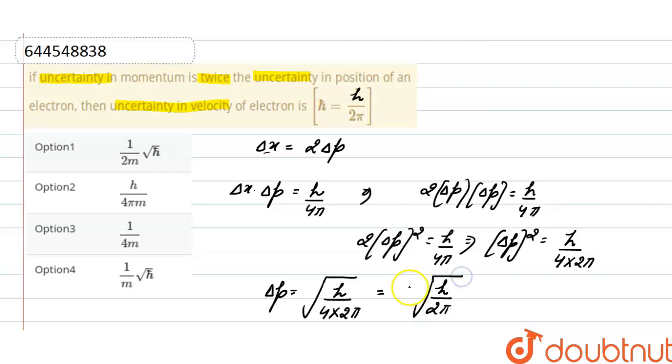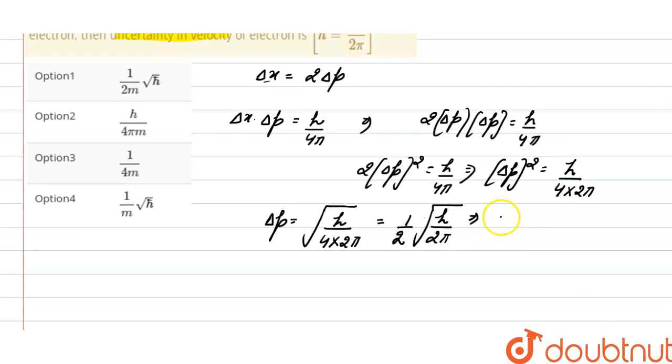And here it is 2. As we know that uncertainty in momentum is equals to mass into uncertainty in velocity. Putting the value here, mass into uncertainty in velocity is equals to 1 divided by 2.